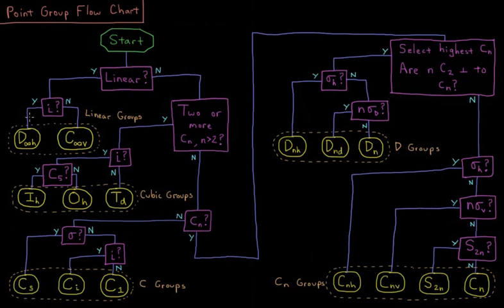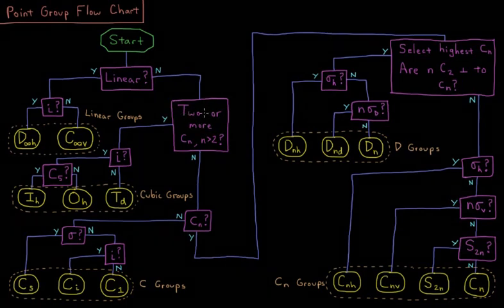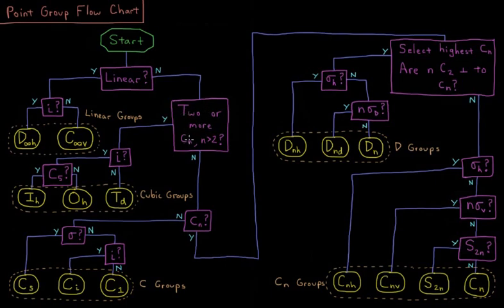So pretty quick classification if we are a linear molecule. If we're not, then we say no, and we go down this road here. We ask ourselves, are there two or more axes of rotation where the number of the axis is greater than two? So are there two or more C3s, C4s, C5s, etc.? So if there are two or more axes that are higher than two,